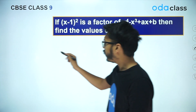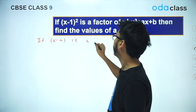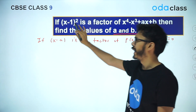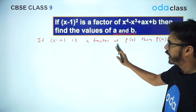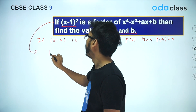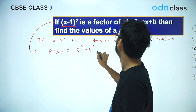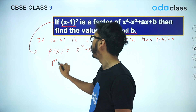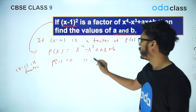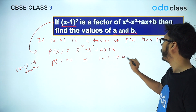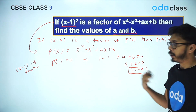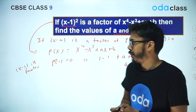We know from Factor Theorem that if (x - a) is a factor of P(x) then P(a) = 0. The problem with this question is we don't have just (x - 1) as a factor — we have (x - 1)² as a factor. But if (x - 1)² is a factor, clearly (x - 1) will also be a factor. So if P(x) = x⁴ - x³ + Ax + B, we can say P(1) = 0, giving us 1 - 1 + A + B = 0, so A + B = 0, or B = -A. This gives us one equation but we need to find both A and B.